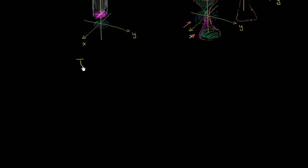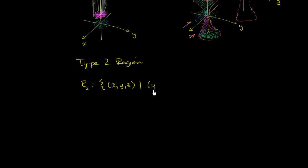Type 2 regions is a region R2 — the set of all x, y, and z's in three dimensions — such that instead of thinking of our domain in terms of x,y coordinates, we think of them in terms of y,z coordinates. So our y,z pairs are a member of some domain D2, and x is bounded below by some function G1(y,z) ≤ x ≤ G2(y,z).